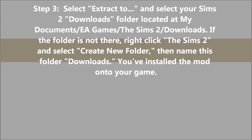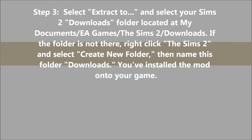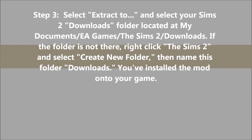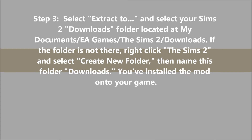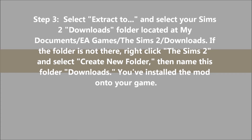Step 3: Select Extract and select a Sims 2 Downloads folder located at My Documents, EA Games, The Sims 2, Downloads. If the folder is not there, right-click The Sims 2 and select Create New Folder, then name this folder Downloads. You've now installed the game mods onto your game.